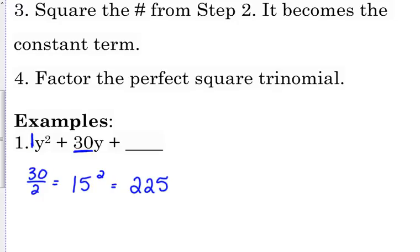That's what goes as your constant term. 225 is your constant term. That is now a perfect square trinomial. 15 times 15 is 225, 15 plus 15 is 30.